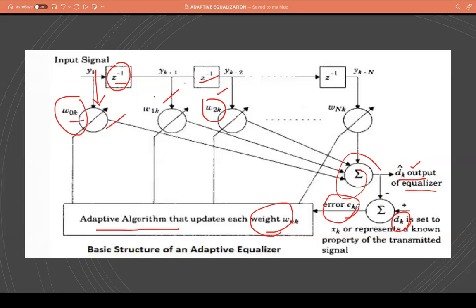So if the error is high, the adaptive algorithm tries to change all the weights until the error is at the minimum level. Hence we call this algorithm an adaptive algorithm since it keeps changing until the error is minimized.